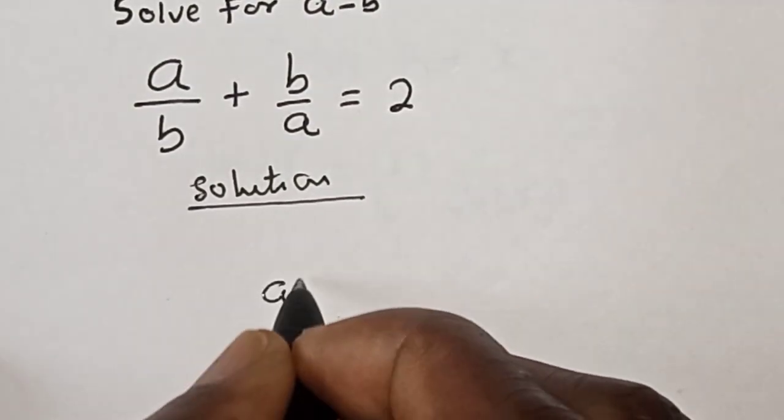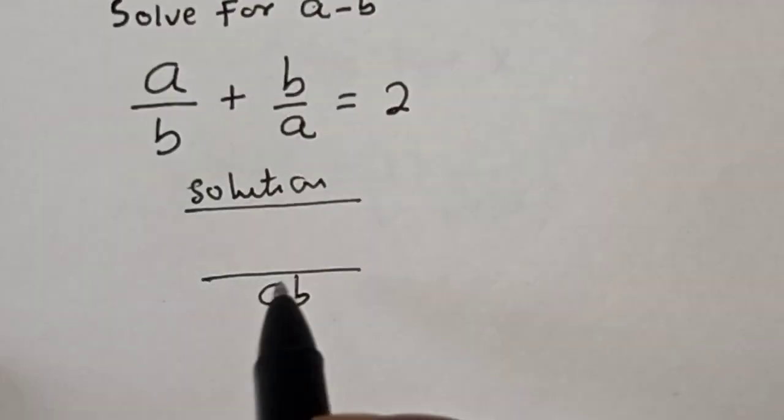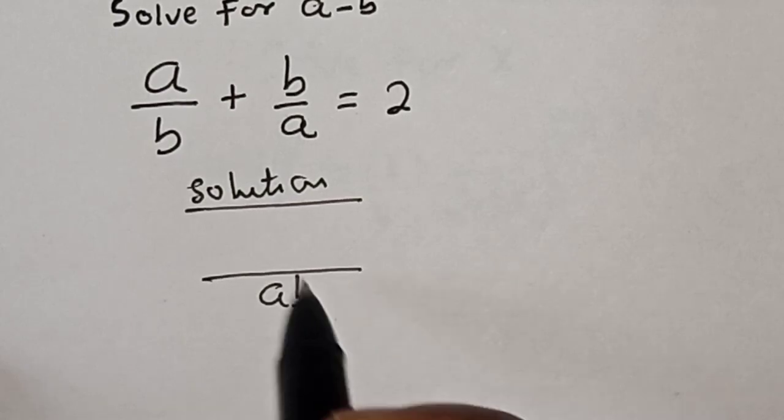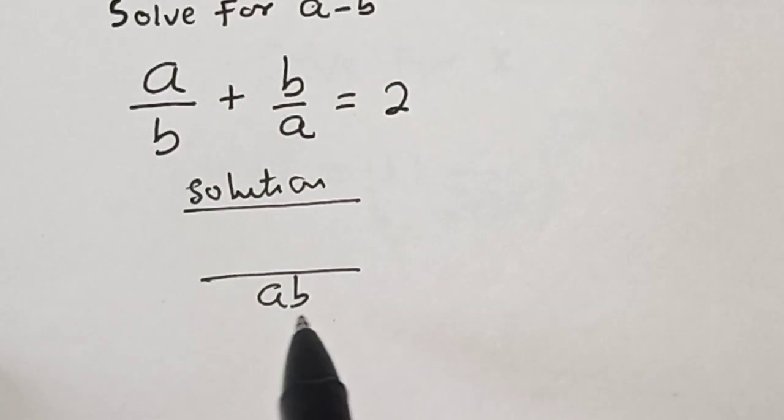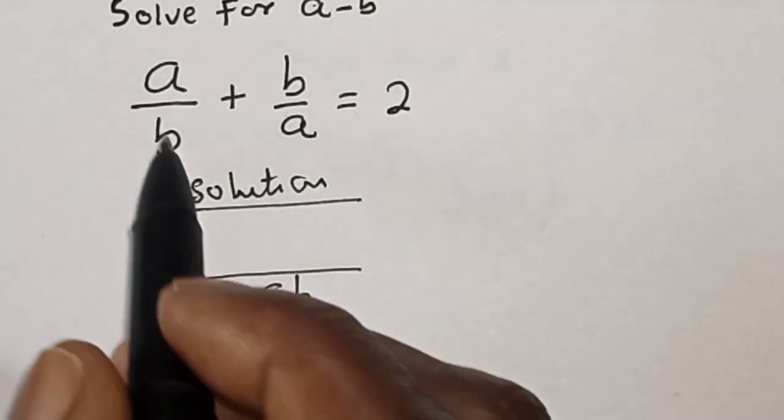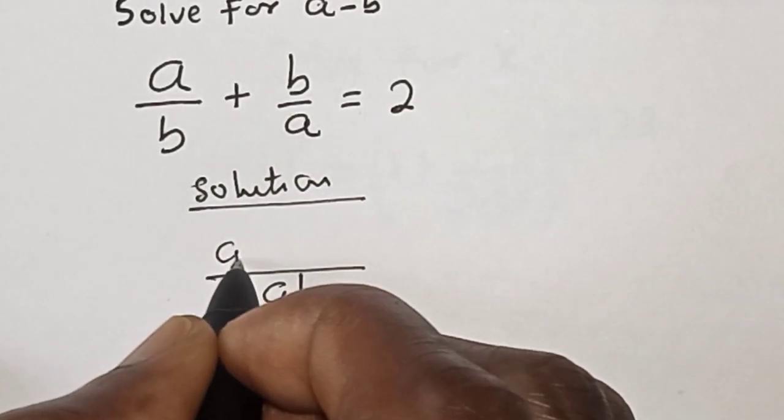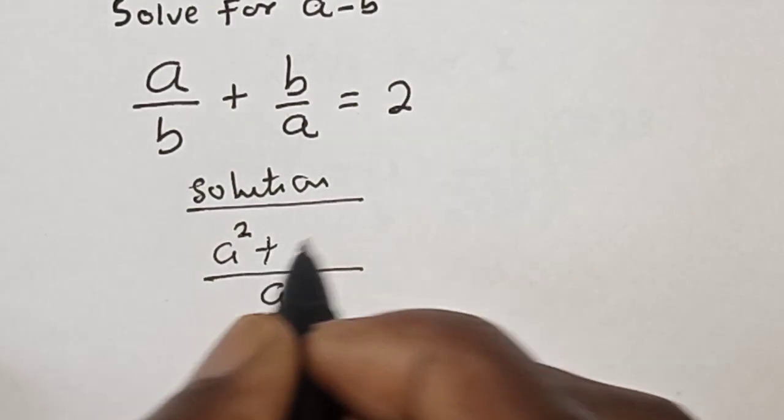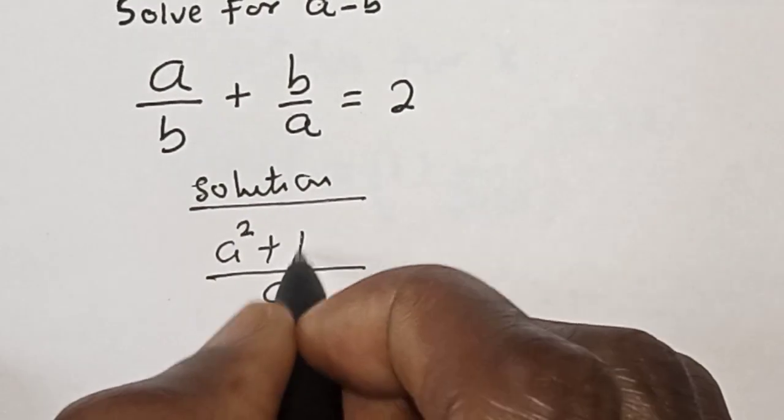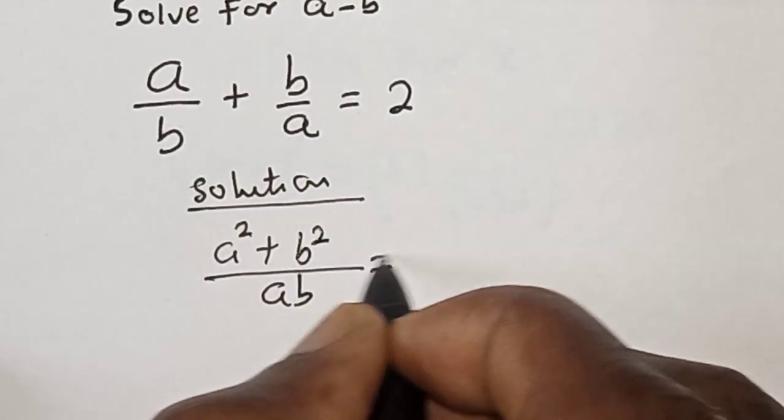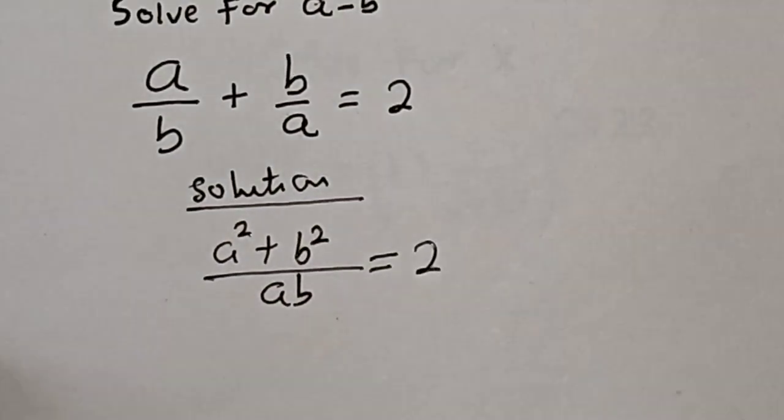So that is, we have ab, then a in ab remain b times b, then b in ab remain a times a. We have a squared plus b in ab remain b times b, b squared is equal to 2.